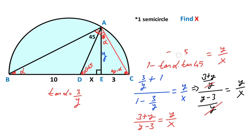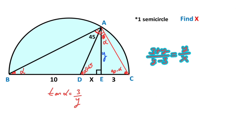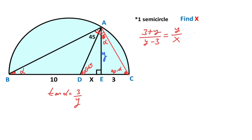Let's clear here. Therefore, x equals y times (y minus 3) over (y plus 3). This is the first equation.